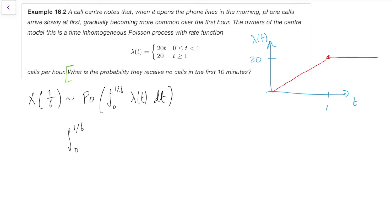Between 0 and a sixth, we're in this first case here, where the lambda of t equals 20t dt. If you integrate 20t, the t becomes t squared divided through by the 2, you get 10t squared between 0 and a sixth. So that's 10 over 36. I typed that into my calculator earlier. Apparently that's 0.278. So the number of phone calls in the first 10 minutes is Poisson with parameter 0.278.